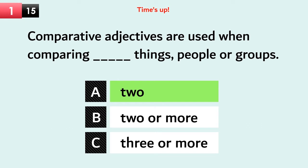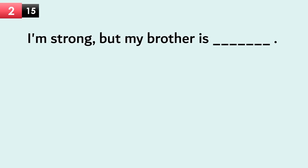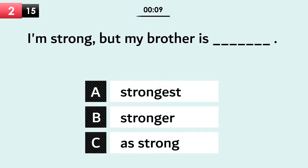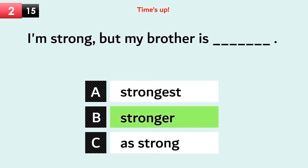Comparative adjectives are used when comparing two things, people, or groups. For example: I'm strong, but my brother is stronger.